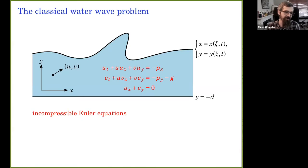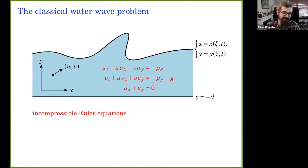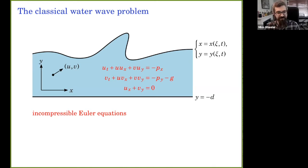Inside the fluid we're solving the incompressible Euler equations, written in components: the x and y momentum equations — F equals ma for fluid particle motion — where the force comes from the gradient of pressure p, plus gravitational forcing. We also have incompressibility, assuming the density has been normalized to one. There's certainly interest in variable density, but I won't discuss that today.